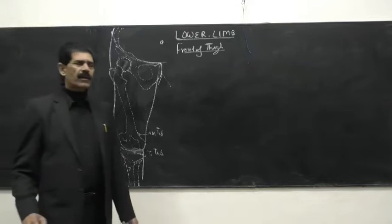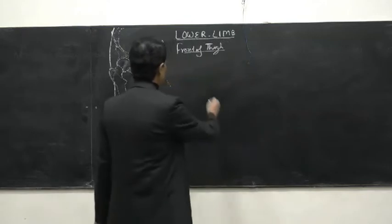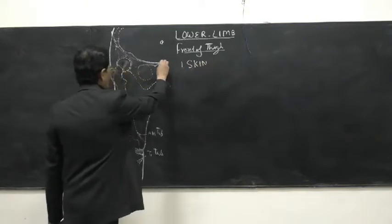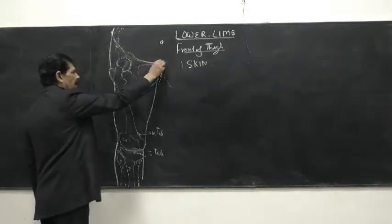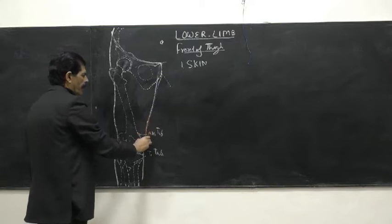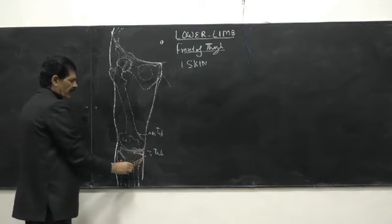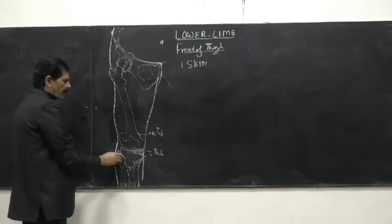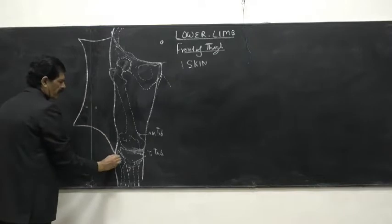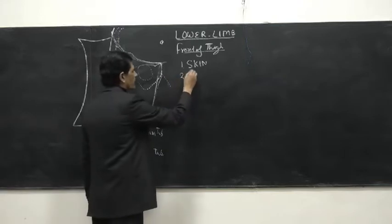As a dissection of the front of the thigh, we are eager to know what lies behind the skin. In the dissection, first we cut the skin — the first layer of the body. We cut along the inguinal line, then along the pubic symphysis, then a cut along the medial border of the skin of the thigh, and then we reflect this skin laterally. After dissection, we remove it, and what we expect as the second layer is the superficial fascia.